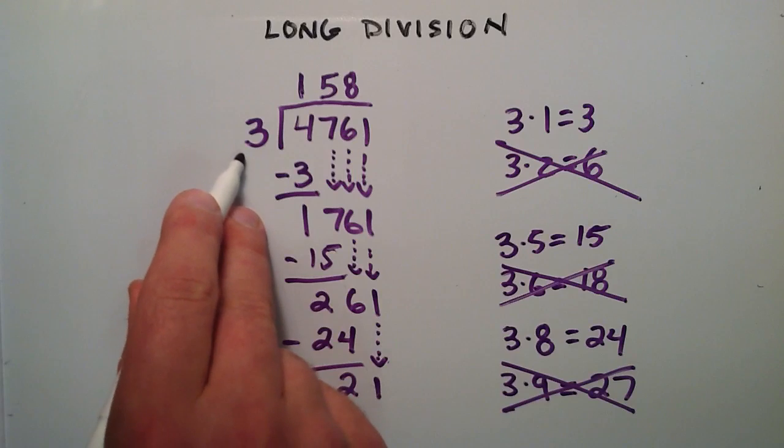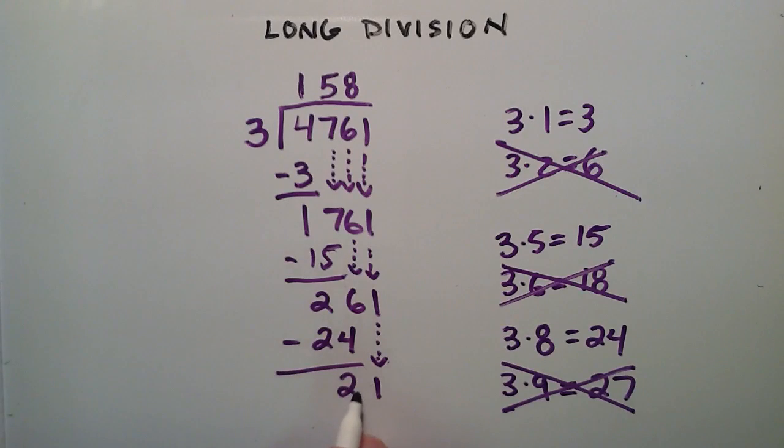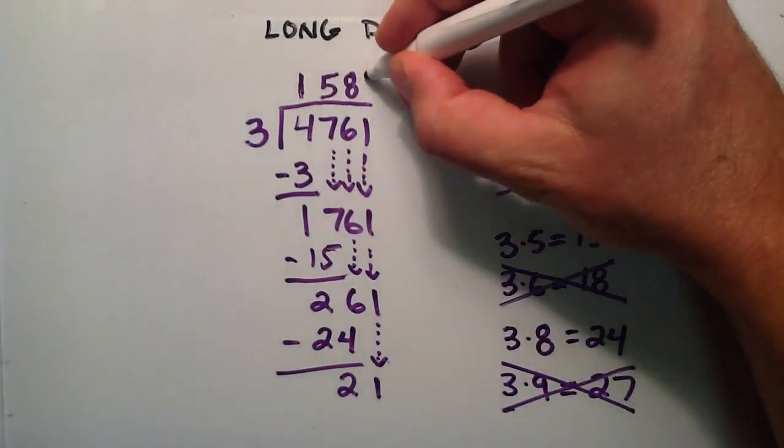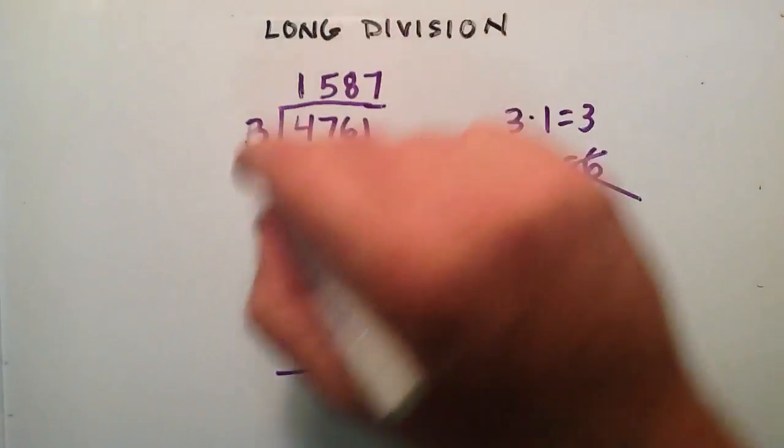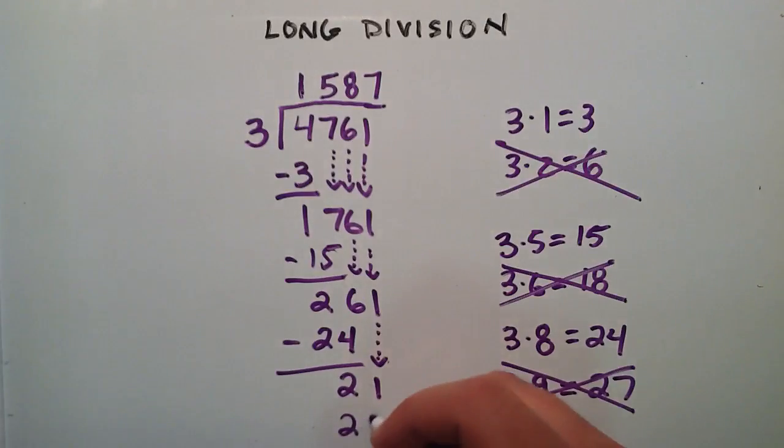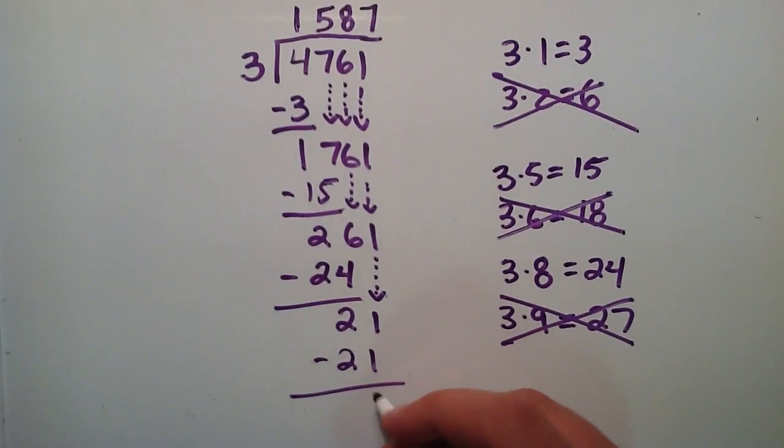And so now we're looking at how many times does 3 go into 21. Well it turns out that 3 times 7 is exactly 21. So we're going to go ahead and put that there. And 3 times 7 equals 21. And 21 minus 21 gives us the result 0.